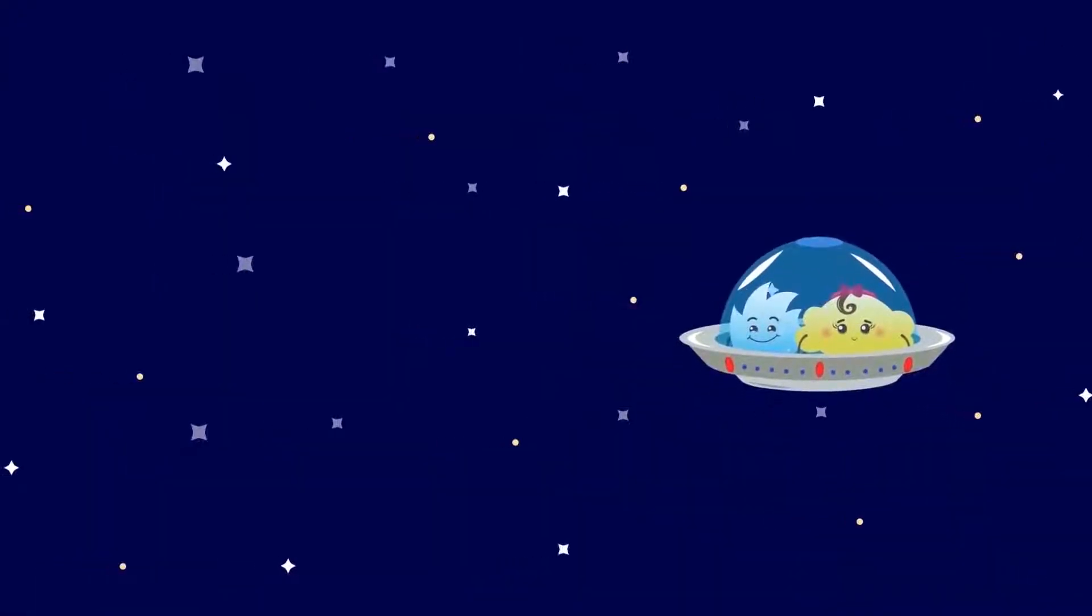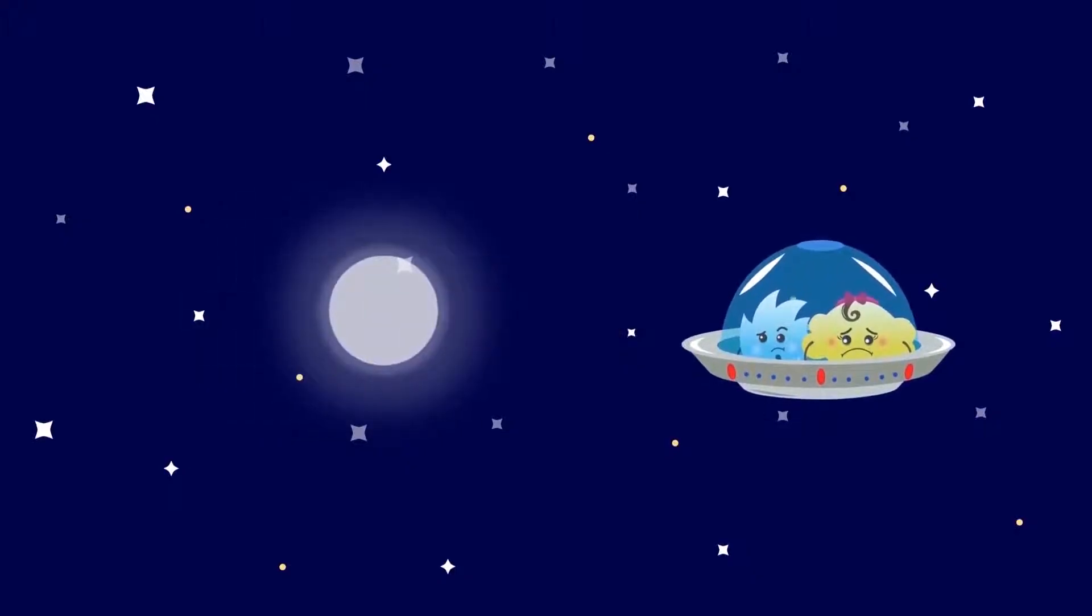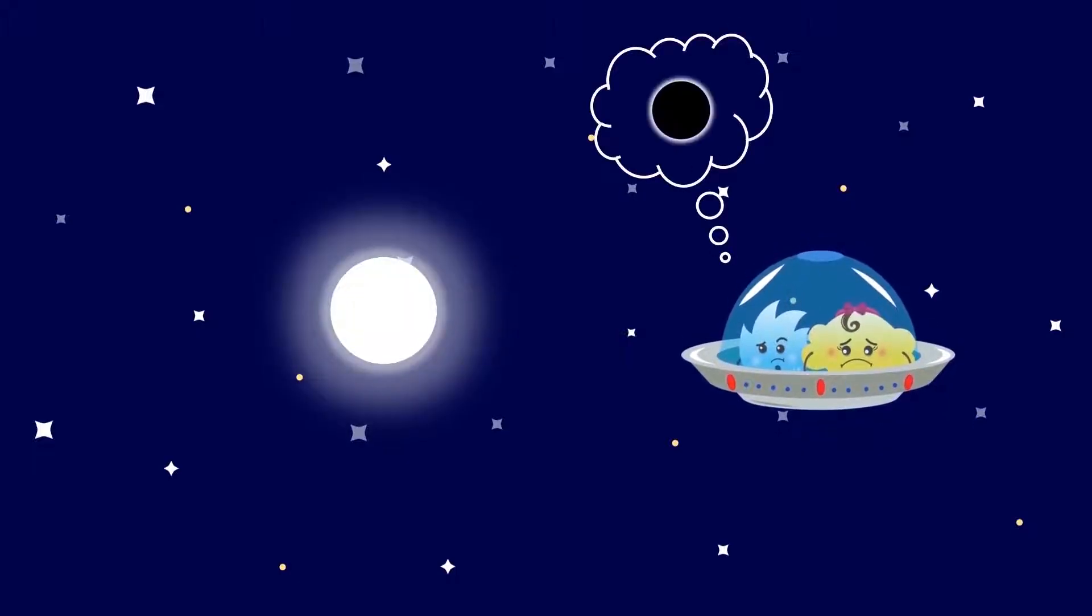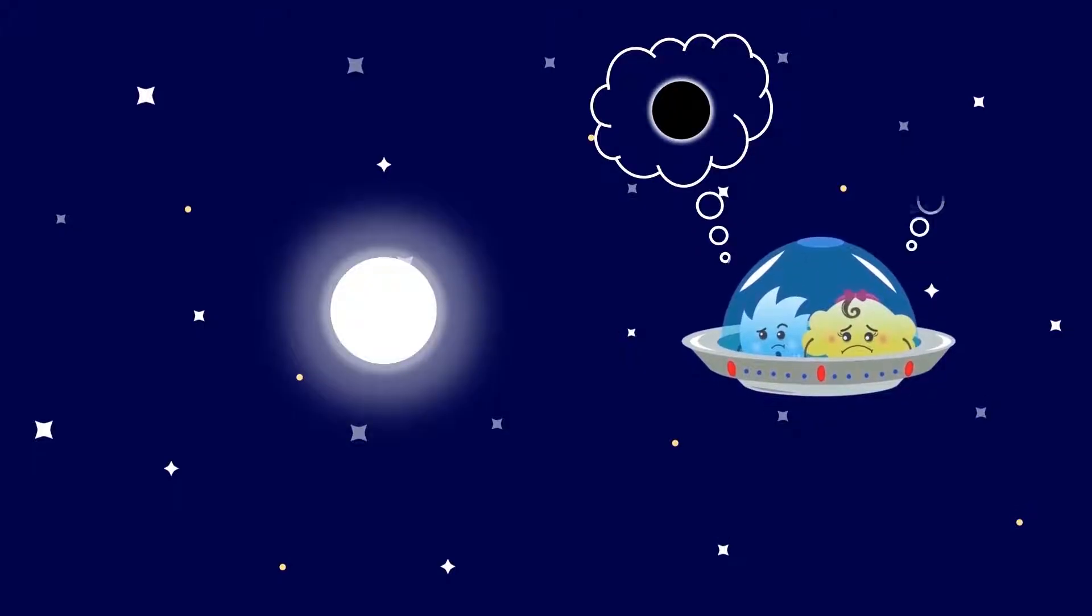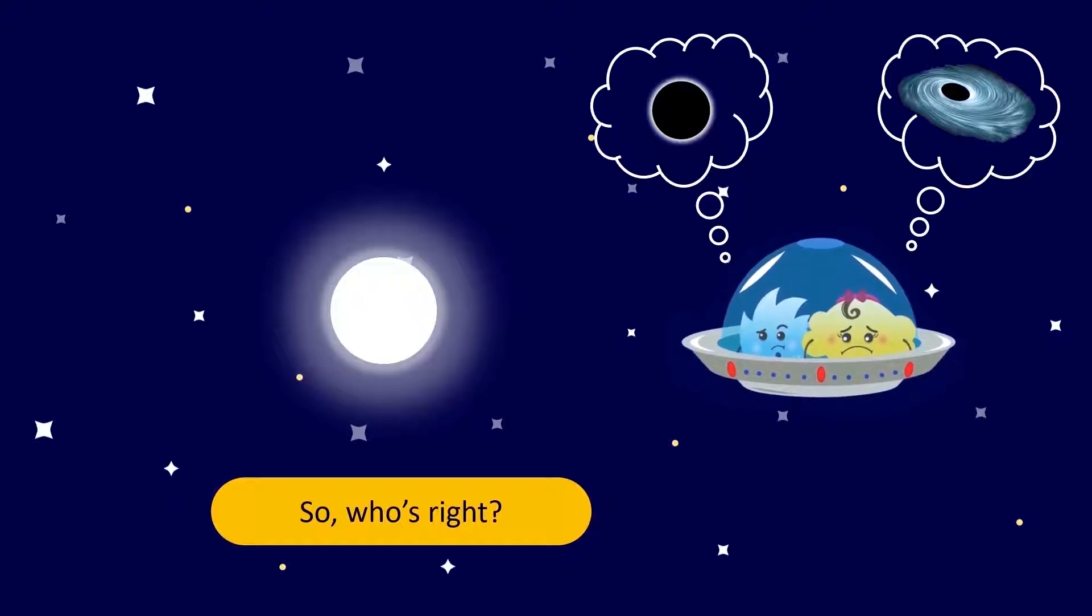Spiky and Bubbles were touring the universe when they saw a star. While discussing the death of stars, they had an argument. Spiky said that stars turn into black dwarfs when they die. Bubbles disagreed. She said that stars turned into black holes instead. So who's right? But hold on. Before we talk about the death of stars, we must first understand the birth of stars.